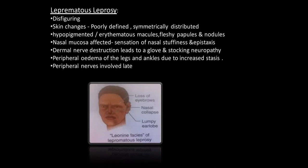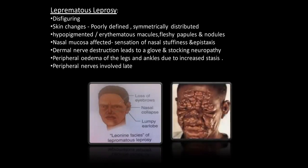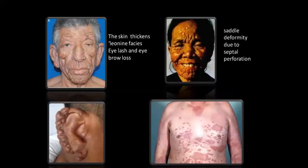This was the picture — the actual picture, just like a lion's face. The skin thickens: leonine facies, eyelash and eyebrow loss, madarosis. Then saddle nose deformity due to septal perforation.